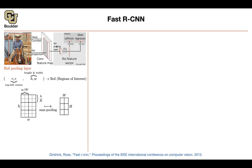The ROI pooling layer gives you feature maps with a fixed dimension — always H and W. You can flatten it and push it through your fully connected networks. You end up with features that go through a fully connected layer to give you the softmax, and then through another fully connected layer to give you the bounding box regressor. This is very similar to spatial pyramid pooling, but you only have one pyramid level. You specify H and W depending on whatever fully connected dimensions you have in the rest of your network.